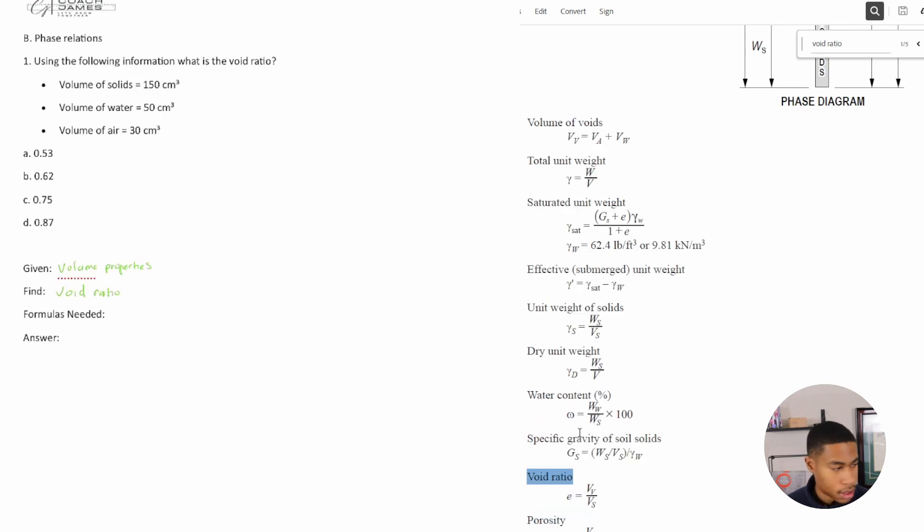So I know that my void ratio, the formula I can start with is E. I'm solving for my E is equal to volume of voids divided by volume of solids. Do I have my volume of solids? Yes. So it's equal to my volume of solids is 150 centimeters cubed.